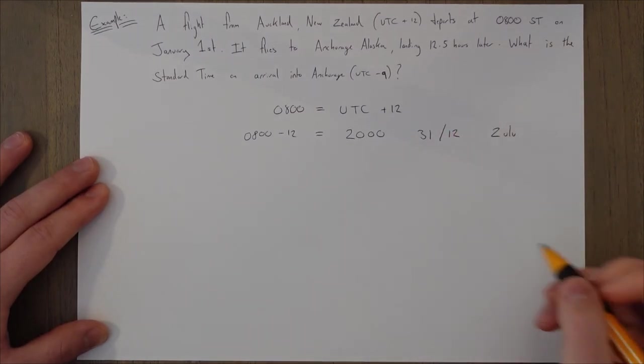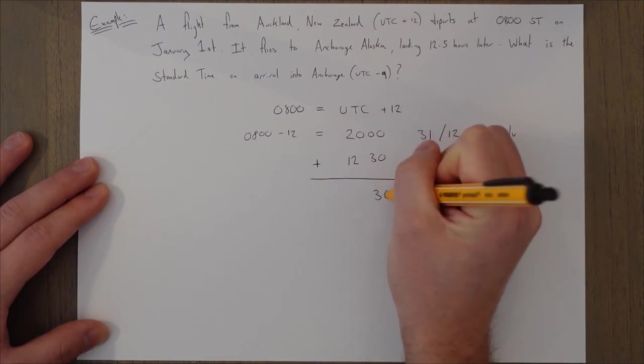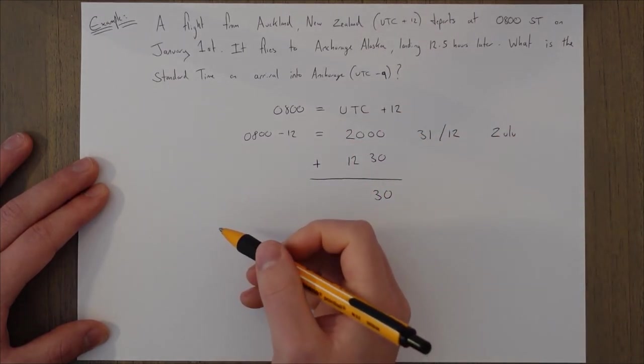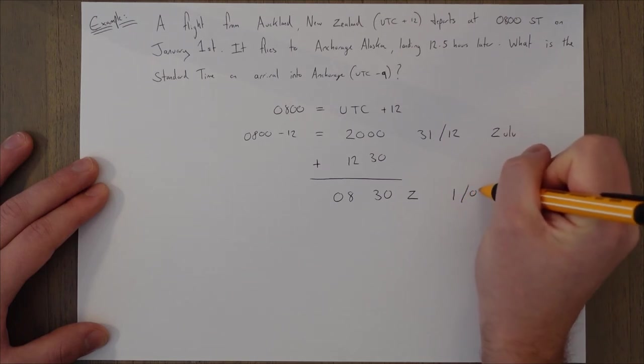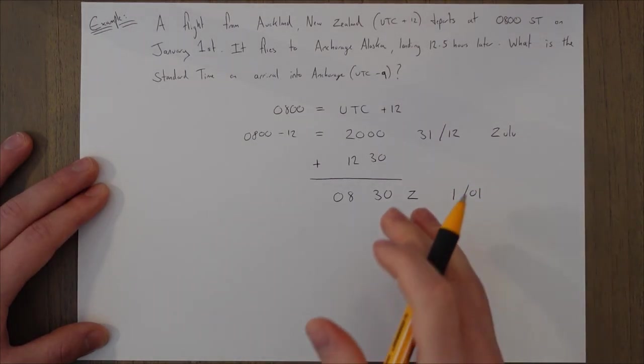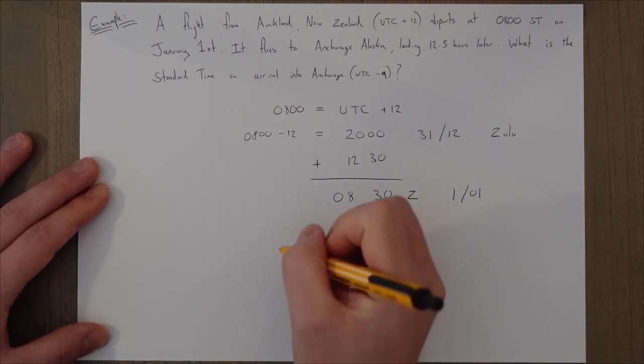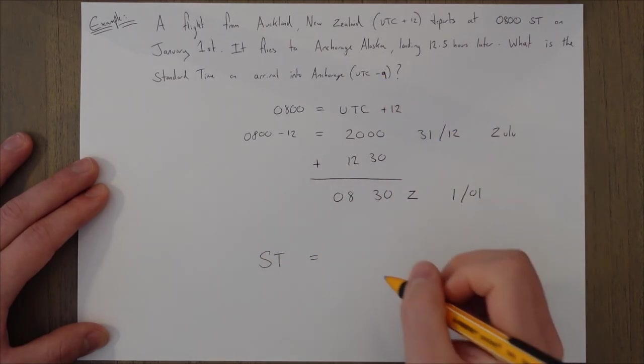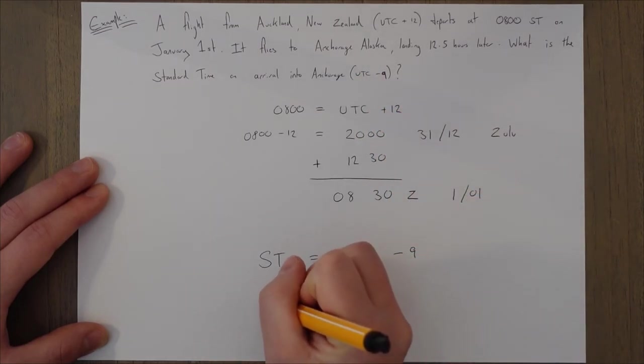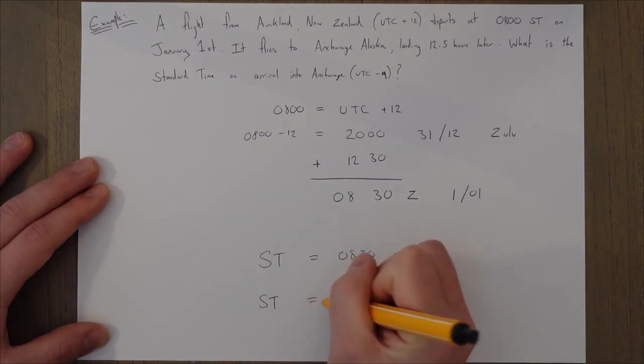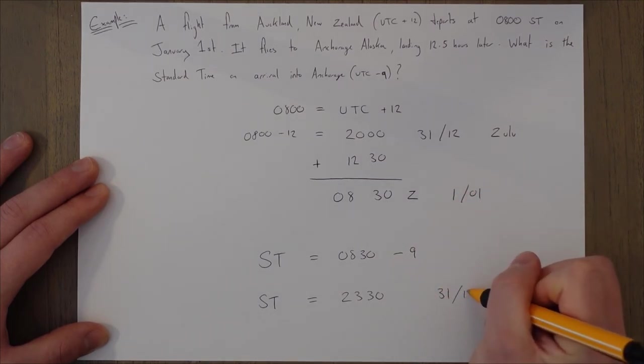We then fly for 12 and a half hours, so plus 12 hours 30 minutes. We can see that we're landing back on January the 1st at 08:30. That's going to be 01. And then we convert back into the local time for Anchorage because that's what we're asking for. What is the standard time on arrival into Anchorage? So the standard time is equal to UTC minus 9, 08:30, that's our UTC Zulu time, minus 9.